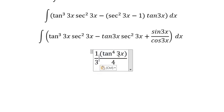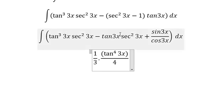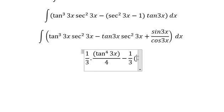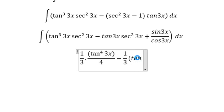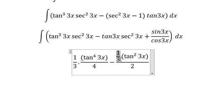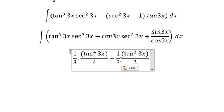Minus 1/3 tan²(3x) over 2, minus 1/3 ln|cos(3x)| + C.